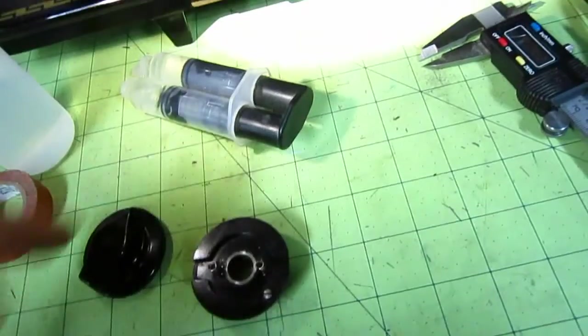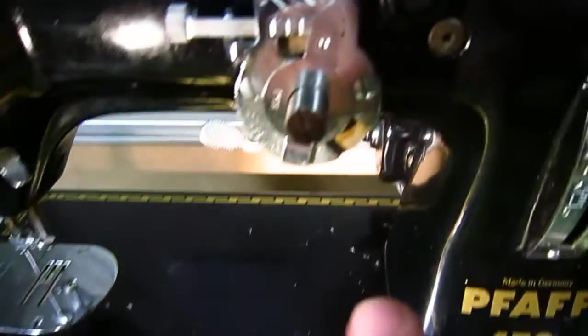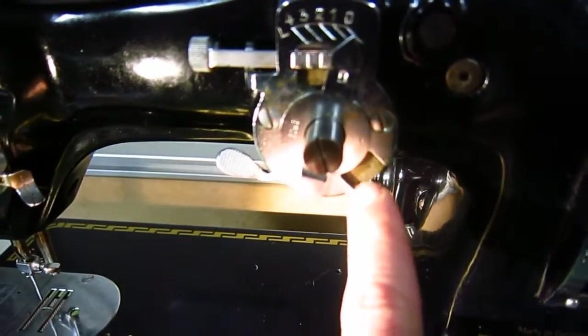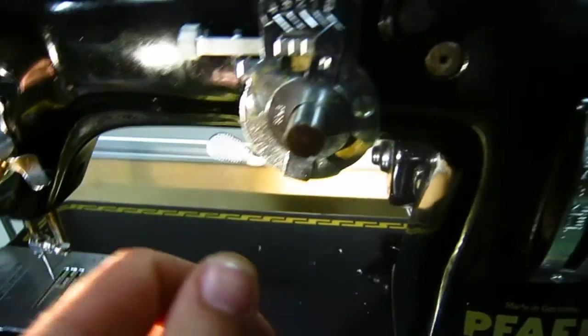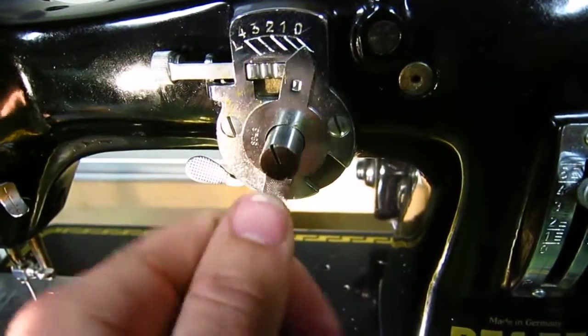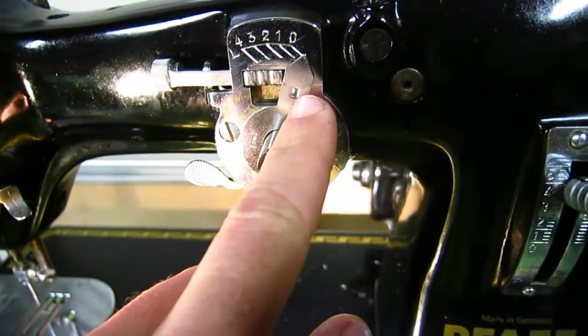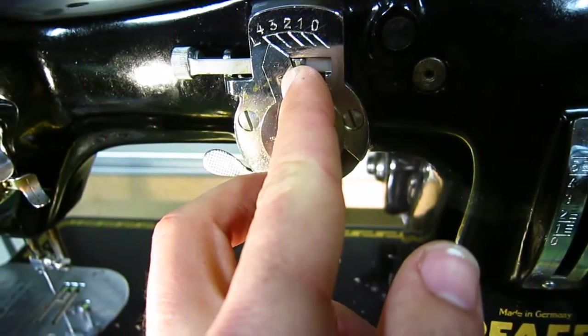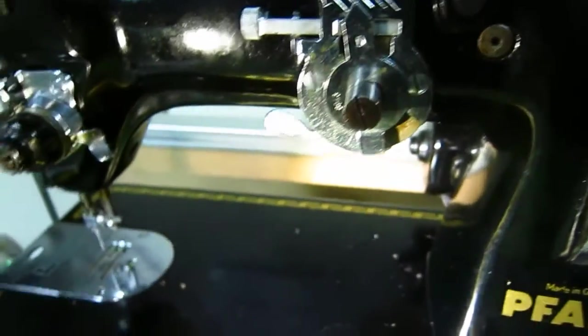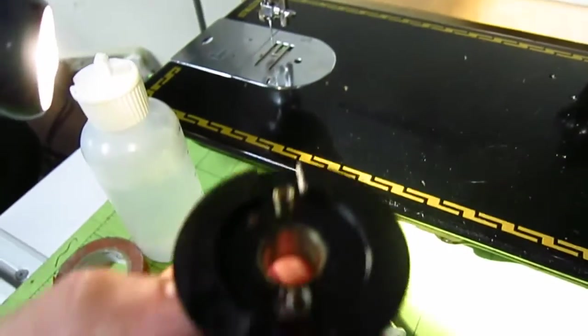What this basically does is that stop screw rides in this cutout here, and these cutouts are basically stops that limit the amount of travel that this knob can make when you're turning it from a straight stitch, which is zero, to a zigzag four millimeters in width.